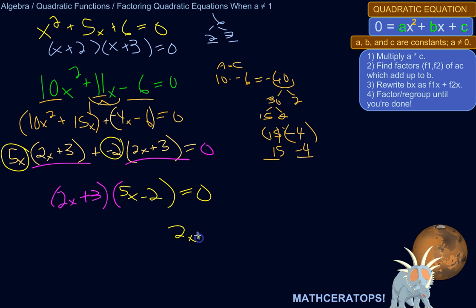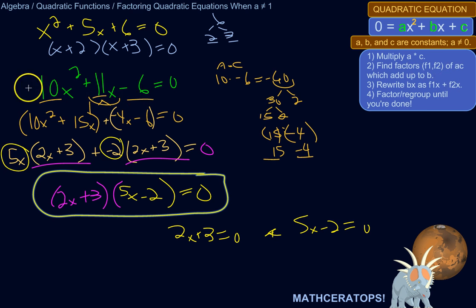Now you can go on to solve 2x plus 3 equals 0, or 5x minus 2 equals 0. And just solve for x in each case. This is the main piece, factoring that. So that's the process. Multiply a by c. Find the factors of c that will add up to b. Rewrite b as one of those factors times x plus the other factor times x. Group the left two and then the right two. Factor each one. And then factor again based on the common factor there. And you're done.